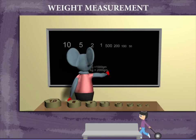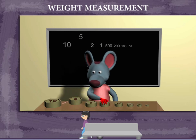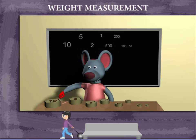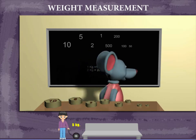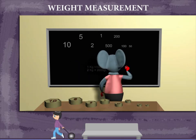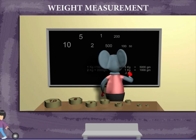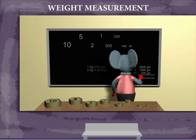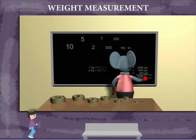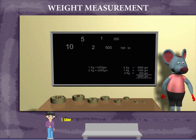He now separates the 5 kilogram, 1 kilogram, and 200 gram weights. He explains: 5 kilogram, 1 kilogram, and 200 gram added together gives you 6200 gram. So simple!